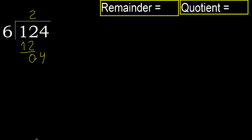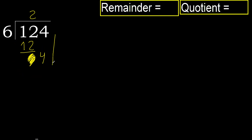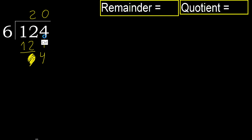Next, bring down — 4 is less, therefore next there is no number. Therefore finish it — complete, always complete with 0. Complete, because here we finish it with this number.